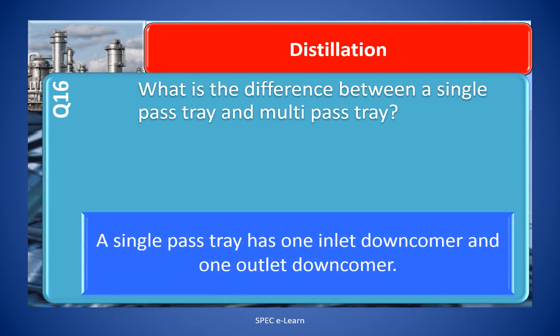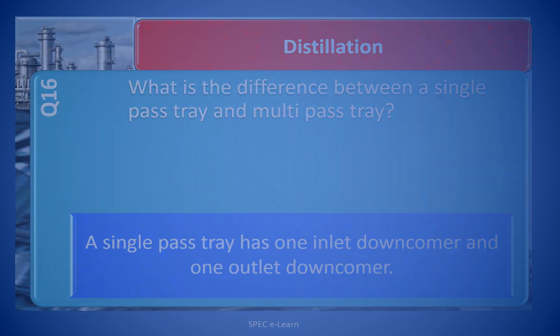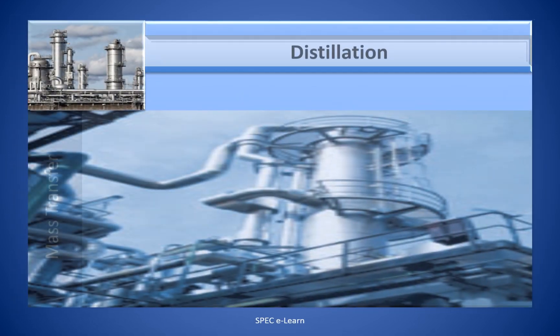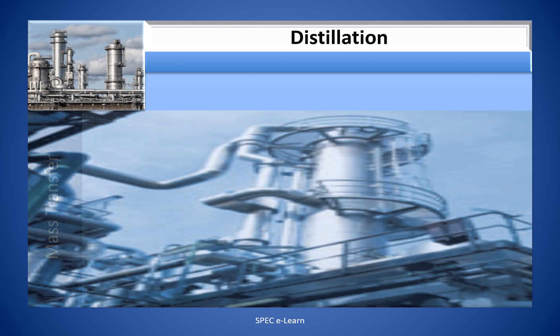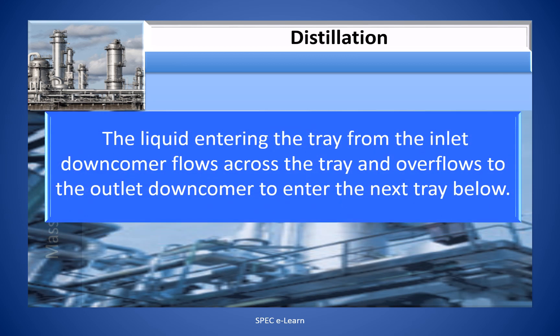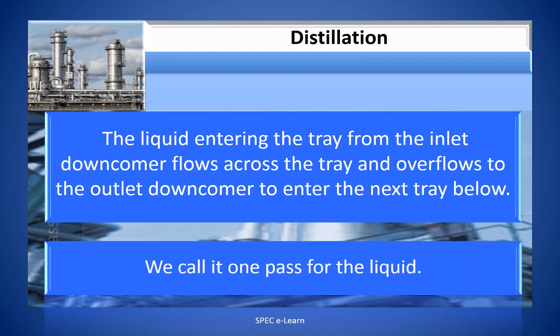A single pass tray has one inlet downcomer and one outlet downcomer. The liquid entering the tray from the inlet downcomer flows across the tray and overflows to the outlet downcomer to enter the next tray below. We call it one pass for the liquid.